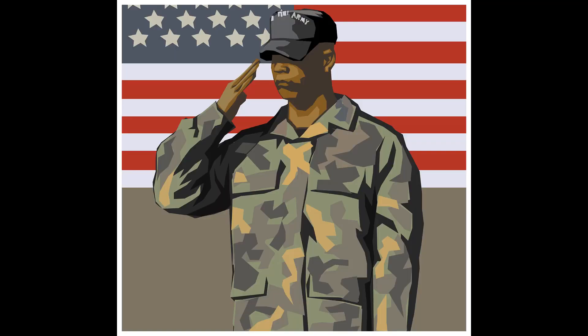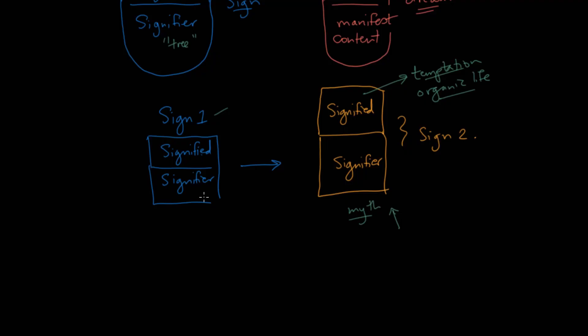Another example is of a soldier, let's say a black soldier, giving a salute to the flag, and I've just changed the flag here from the French one to the American one, but it's really the same idea. On the level of sign one, this is simply somebody giving a salute, right? On the level of sign two, this tells you everything about the empire, about the military, about patriotism, all of these kinds of things. So that's how every time we move from sign one, which then turns into sign two.